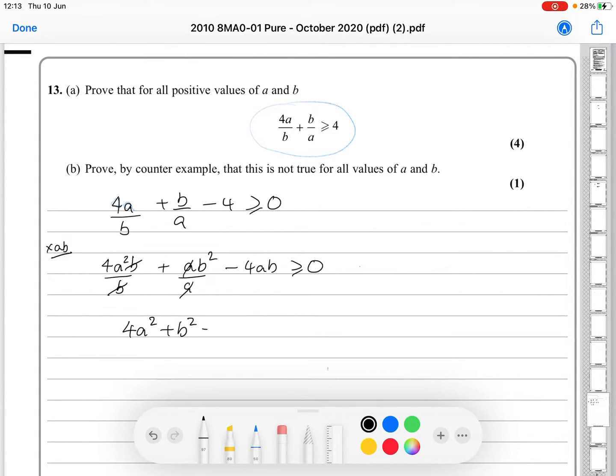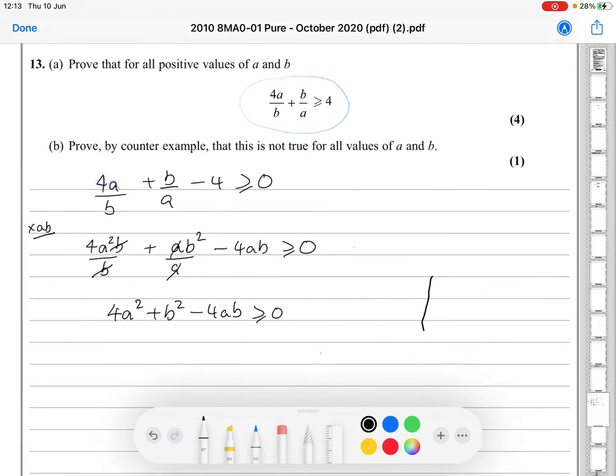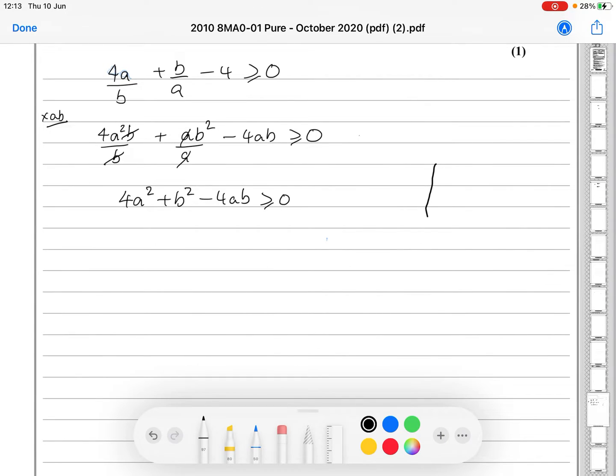So, we're left with 4a squared plus b squared minus 4ab is greater than or equal to 0. Now, hopefully, the idea should cross your mind that this is a kind of quadratic